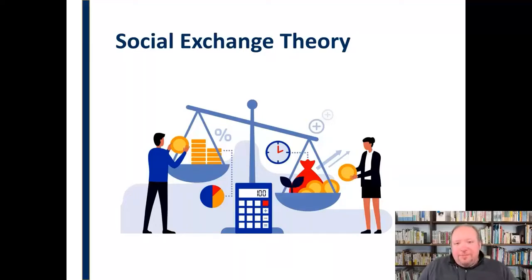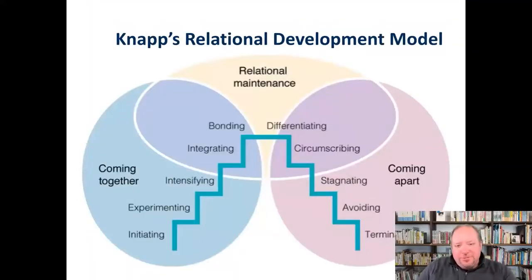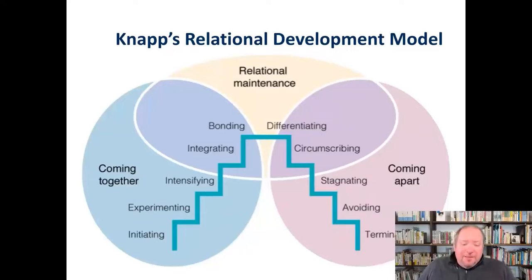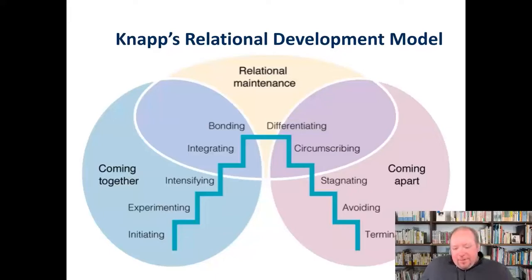One of the more interesting developmental models comes from Knapp — now Knapp and Vangelisti — who developed this relational development model, sometimes called the staircase model. It really lays out the different stages of relationships. Let me point out this is a staircase, not an escalator — it doesn't automatically go all the way up or all the way down. At any point in these stages, a relationship could fizzle out or meet its end.